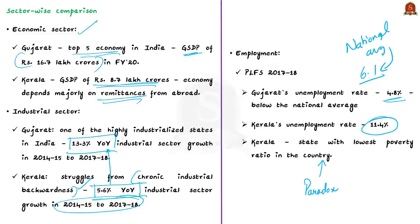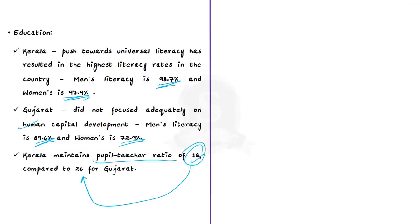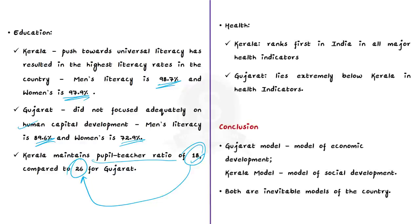In education, Kerala's push towards universal literacy has resulted in the highest literacy rates in the country — 97.9 percent for women and 98.7 percent for men. Gujarat, on the other hand, has not focused adequately on human capital development, with men's literacy at 89.6 percent and women's literacy at just 72.9 percent. Kerala has excellent higher education infrastructure and maintains a pupil-teacher ratio of 18, while Gujarat's is higher at 26.